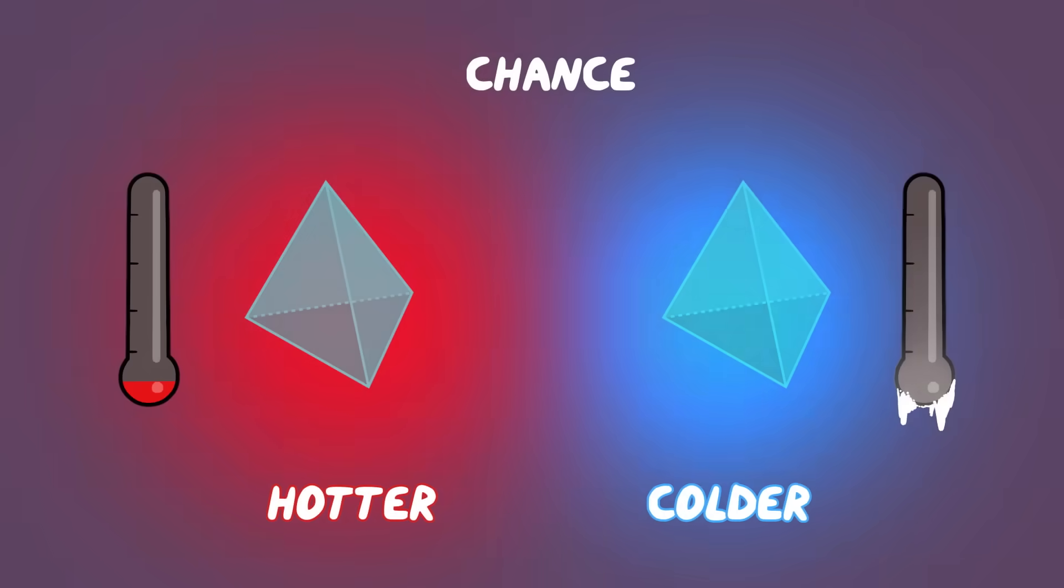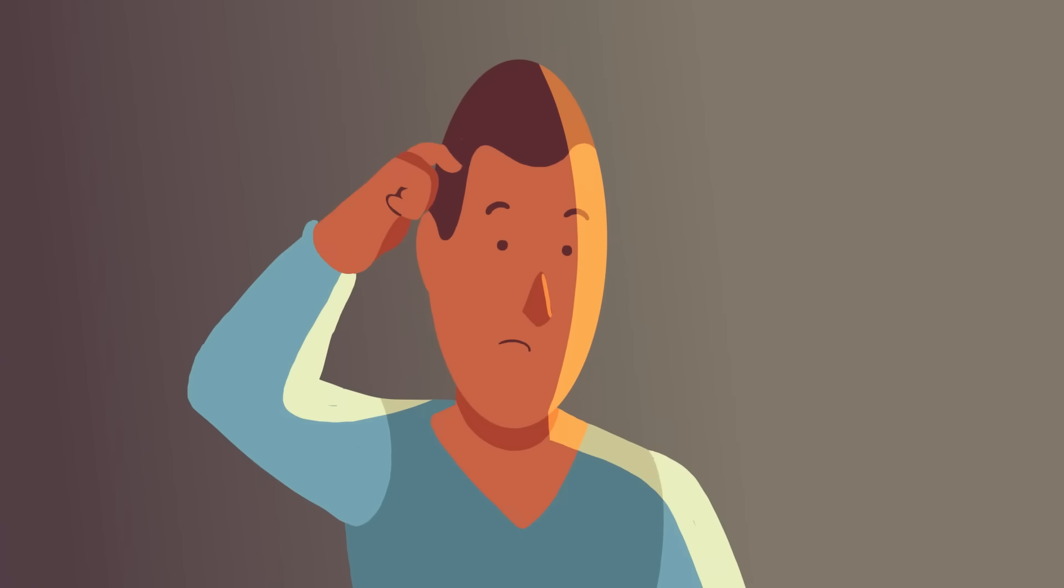But even in that example, there is an 8% chance that the hot object would get hotter. Why doesn't this ever happen in real life?